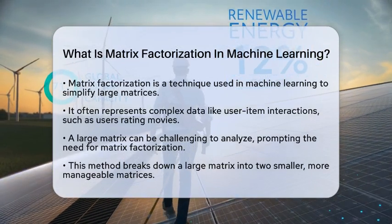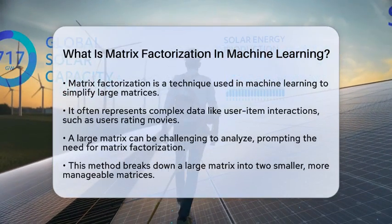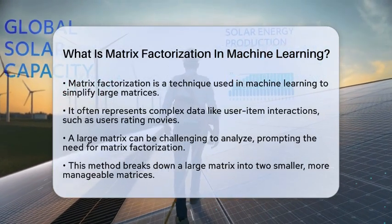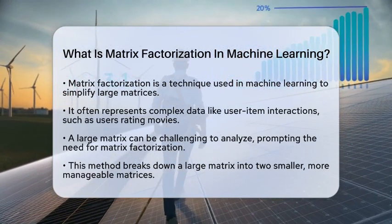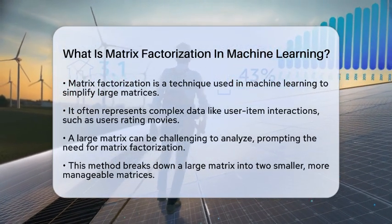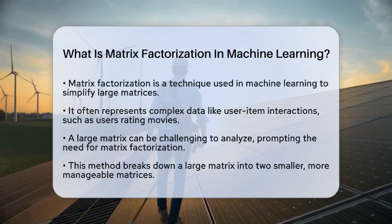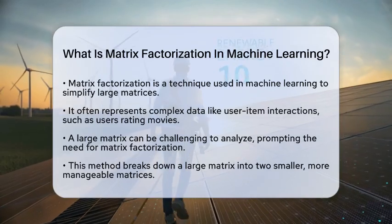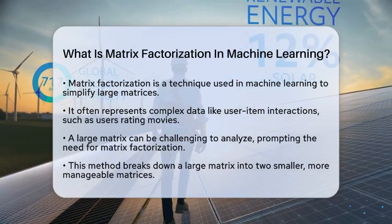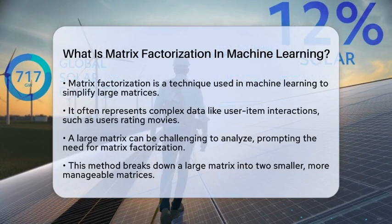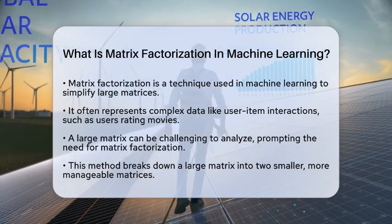Matrix Factorization is a mathematical method used to simplify large matrices, which often represent complex data like user-item interactions. Imagine a big table where rows are users and columns are movies, with numbers showing how much each user liked each movie. This large table can be hard to work with.